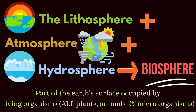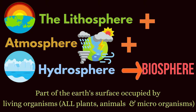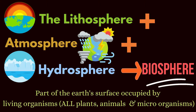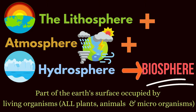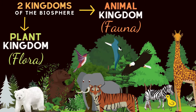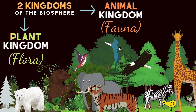So what is the biosphere? It is the part of the earth's surface occupied by living organisms — all plants, all the animals and all the microorganisms. The two kingdoms of the biosphere are the animal kingdom and the plant kingdom.